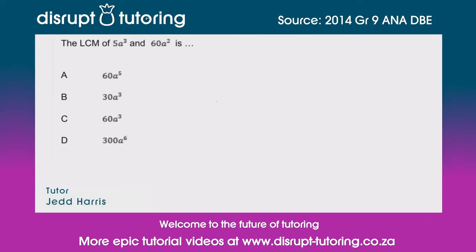Hey peeps, it's Jed here from Disrupt Tutoring, and as always it's such a pleasure to join you today. We've got a lowest common multiple question, but in this case we've got some variables to deal with, which always makes things a little bit interesting. So we've got the question: the lowest common multiple of 5a³ and 60a² is what?